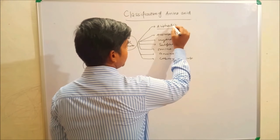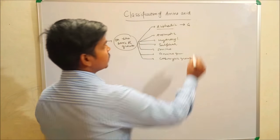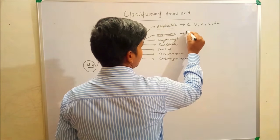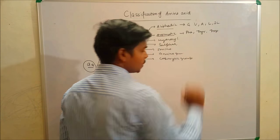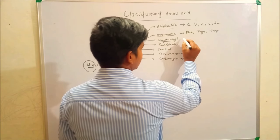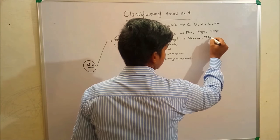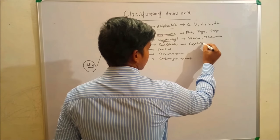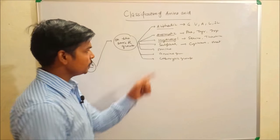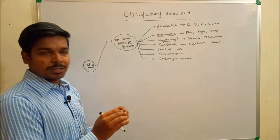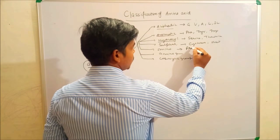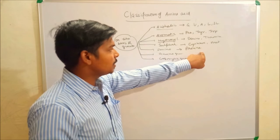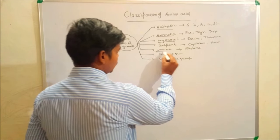Aliphatic amino acids are glycine, alanine, valine, leucine, and isoleucine. Aromatic amino acids are phenylalanine, tyrosine, and tryptophan. Hydroxyl group amino acids are serine and threonine. Sulfur-containing amino acids are cysteine and methionine. In the amino group category, there is only proline — because while all amino acids contain primary amine, proline is an exception containing a secondary amine.